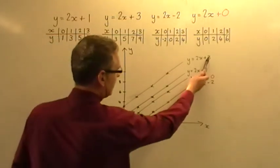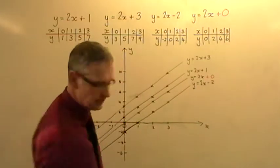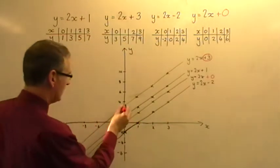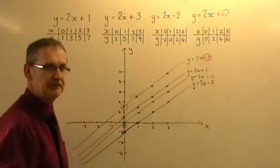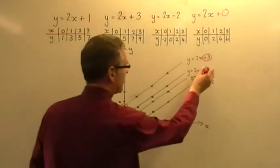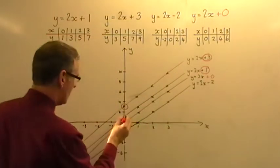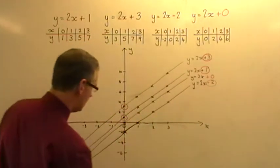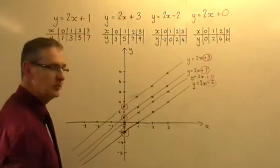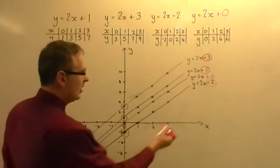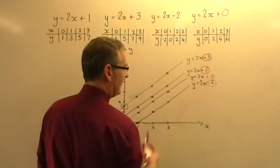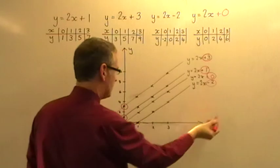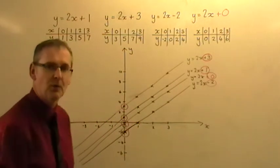The thing that is different is the number on the end, and the number on the end is what I want to concentrate on in this last section. The plus 3 on the end—notice it crosses at plus 3 on the y-axis. The plus 1 on the end—notice it crosses at plus 1 on the y-axis. The minus 2 on the end shows minus 2 on the y-axis. And finally, the plus 0 there—in fact we don't normally put it in, but it means the same as plus 0—and lo and behold, it crosses at 0 on the y-axis.